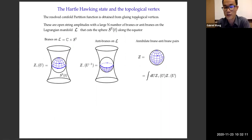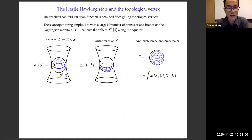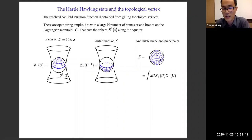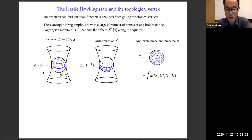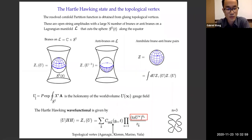The partition function is obtained by gluing topological vertices. These vertices are open string amplitudes with a large-N number of branes or anti-branes on this Lagrangian, and this Lagrangian cuts the sphere along the equator. If we put the branes on the Lagrangian and let the worldsheets wrap the upper half of the hemisphere, we call the amplitude Z-plus; Z-minus is the amplitude with anti-branes on the Lagrangian and worldsheets on the lower half. When we annihilate the brane-anti-brane pairs, we get back the worldsheets that wrap the whole sphere. This is very much like the QFT construction of the Hartle-Hawking state. Z-plus of U is playing the role of the Hartle-Hawking state associated with the resolved conifold partition function.